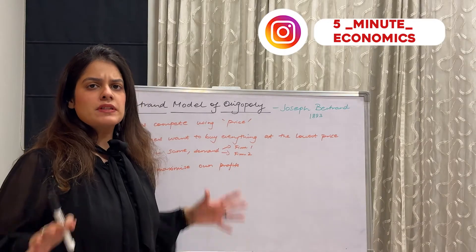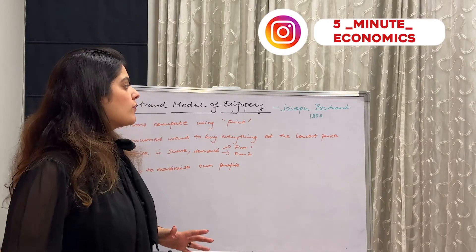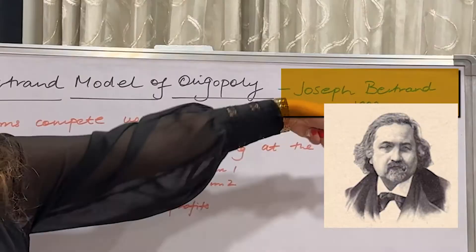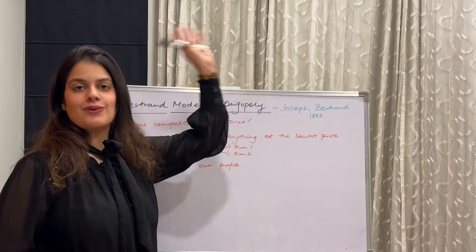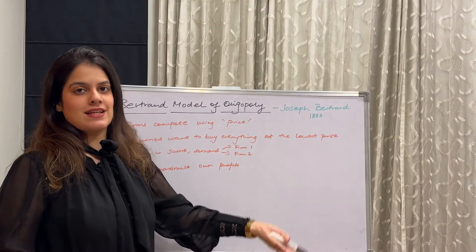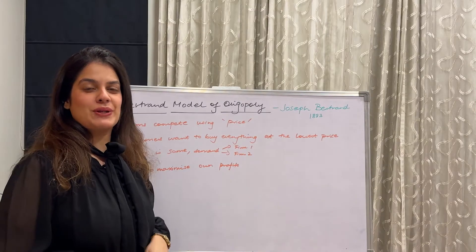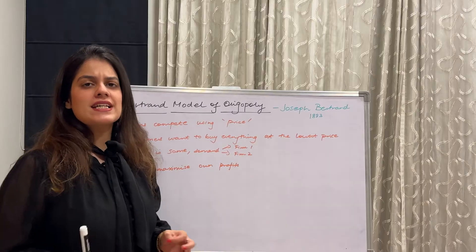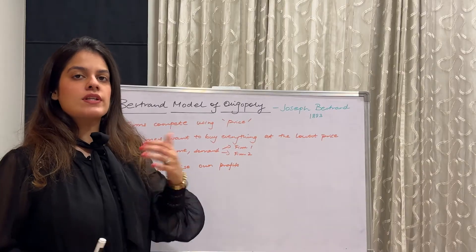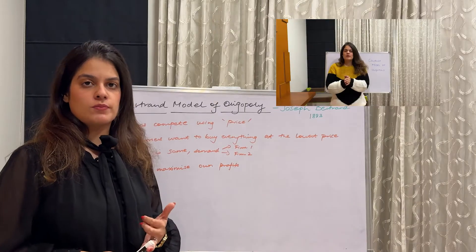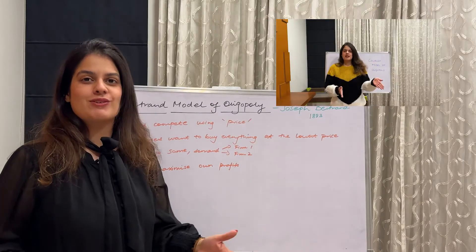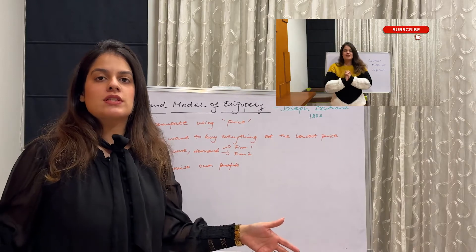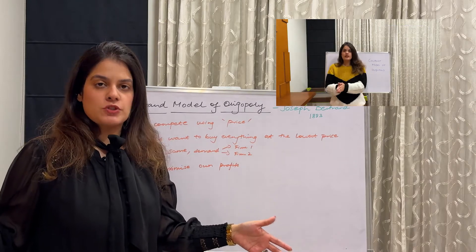Bertrand's model of Oligopoly was given by Joseph Bertrand in 1883 — that old a model it is, and here we are in 2024 studying it. I've already explained the Stackelberg and Cournot models; if you haven't watched those, please check the links in the description below.